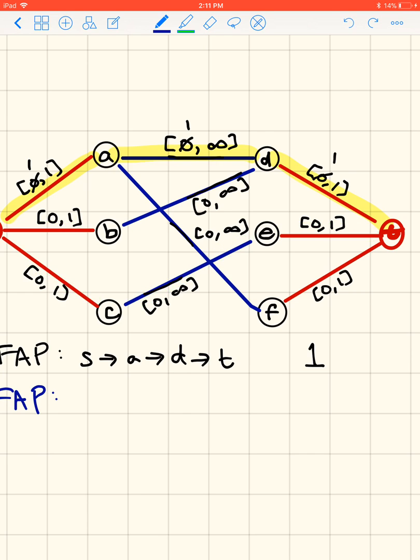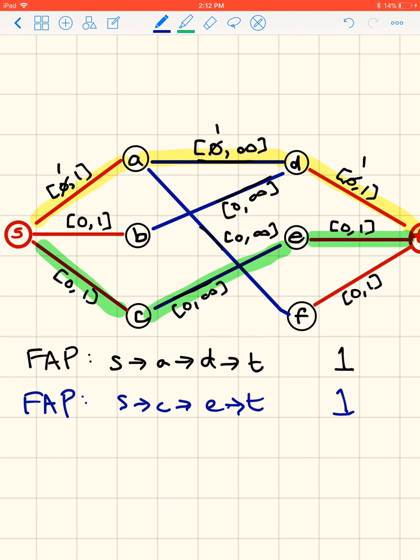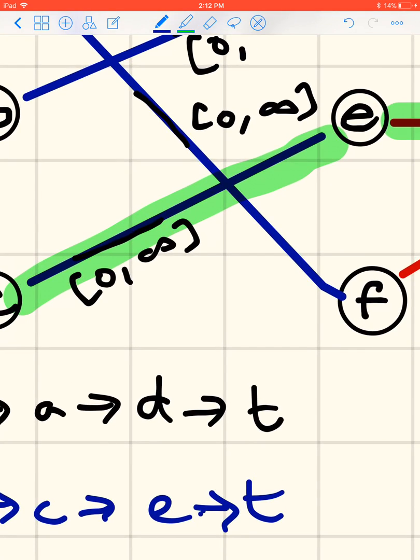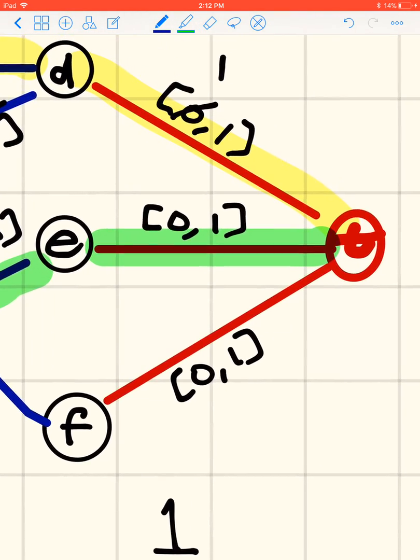Actually, let's get rid of some of that highlighting first. Just highlight the ones we're going to use. From S to C to E to T, capacity is 1 again, and so we update those values, 1, 1, 1.